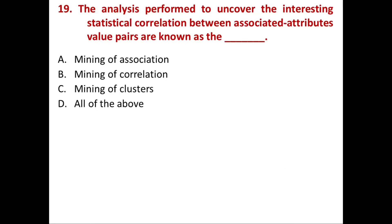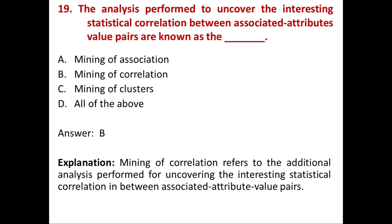Next question: The analysis performed to uncover the interesting statistical correlation between associated attributes and data mining attribute value pairs is known as? Option A: Mining of association. B: Mining of correlation. C: Mining of clusters. D: All of the above. Answer is Option B, Mining of correlation. Mining of correlation refers to the additional analysis performed for uncovering the interesting statistical correlation between associated attribute value pairs.